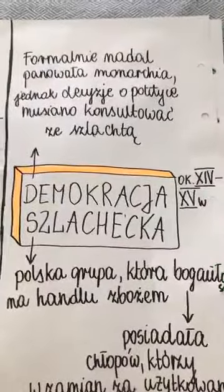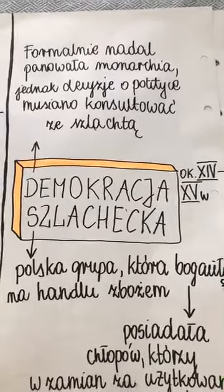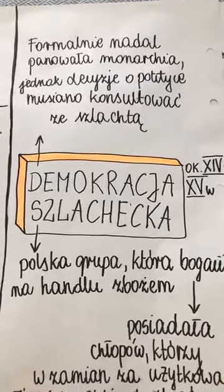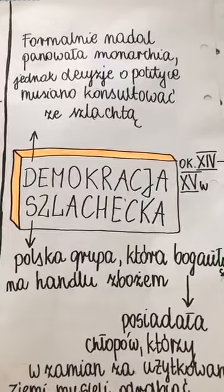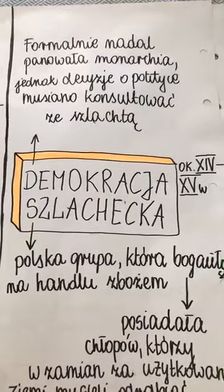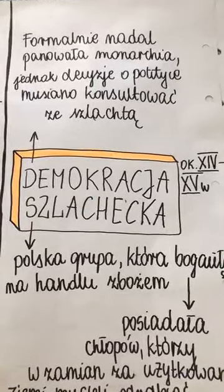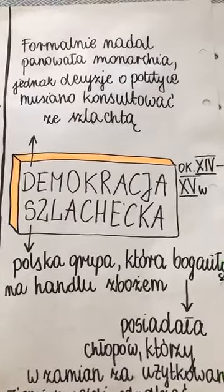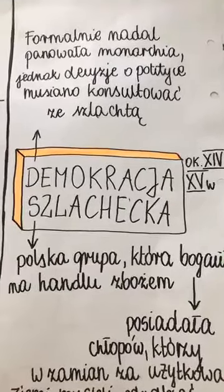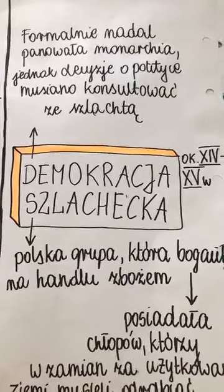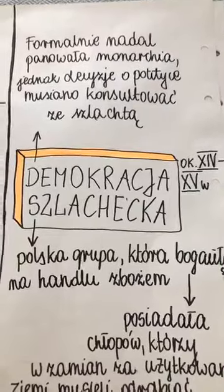Formalnie w demokracji szlacheckiej nadal panuje monarcha. Mamy władcę, mamy nawet dynastię Jagiellonów – ród pochodzący z Litwy. Jednak decyzje o polityce władca będzie konsultował ze szlachtą. Zaraz sobie powiemy, jak to się stało i dlaczego do tego doszło.